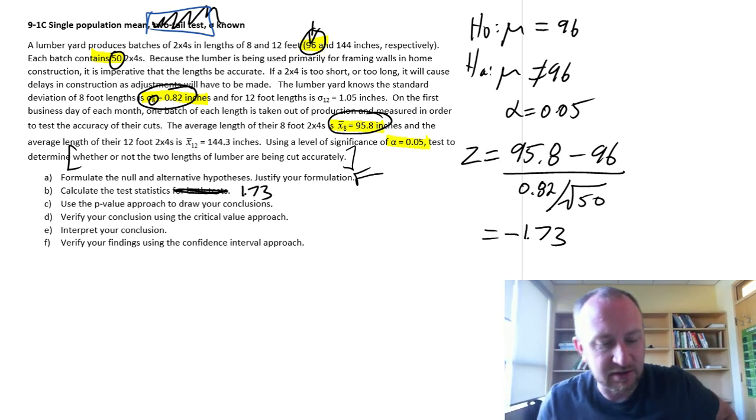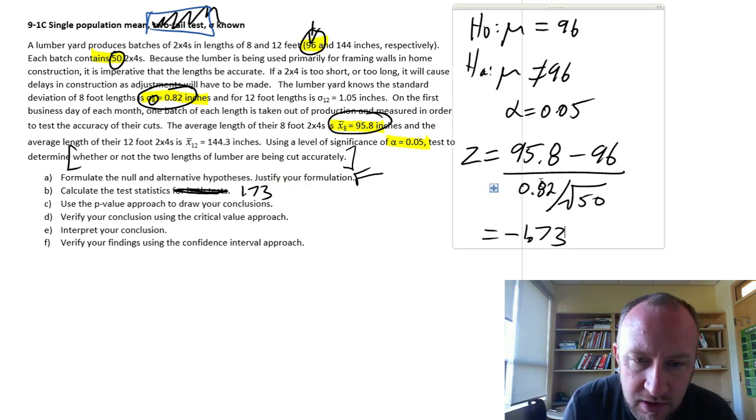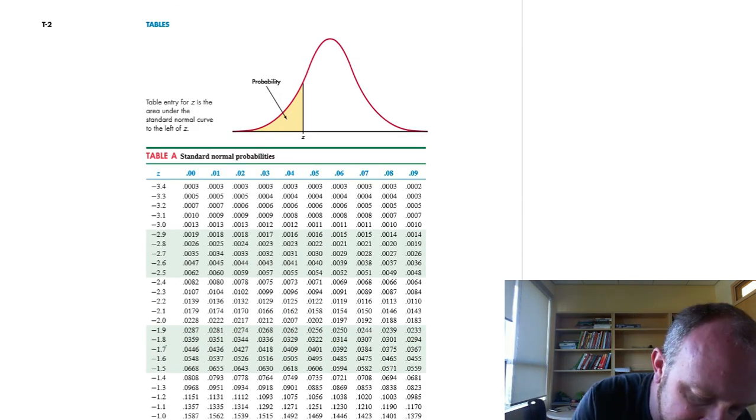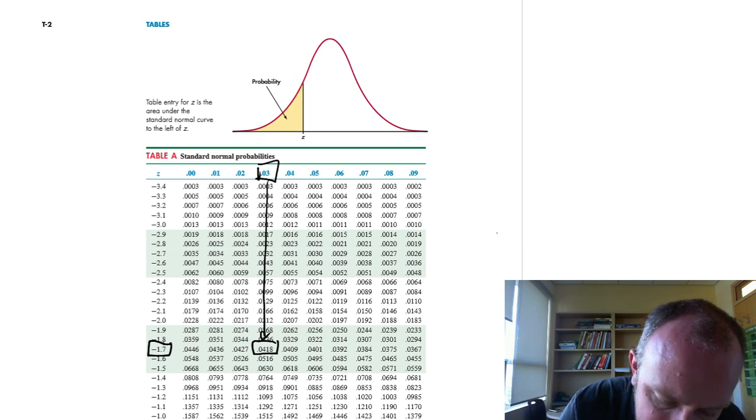Use the p-value approach to draw our conclusions. Okay, so now we want to go to our z tables, and we want to find that value of negative 1.73. So here we go, z, negative 1.7, right there, 1.73. So that comes together, and here we are. So I've got this probability of 0.0418.